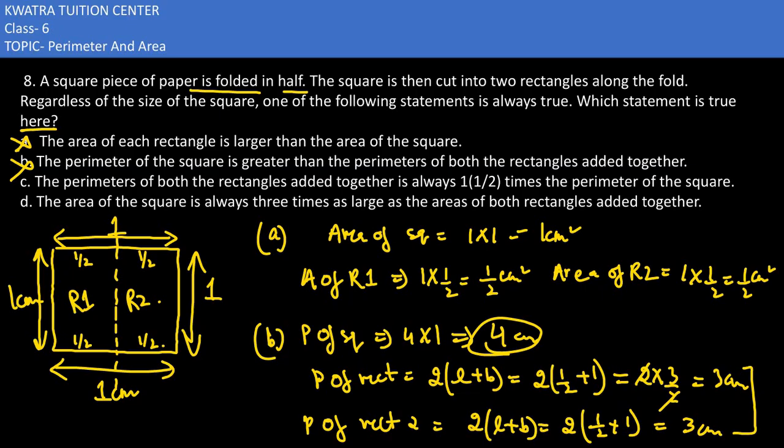Let's check. Perimeter of both the rectangles added together is always 1 and a half times the perimeter of the square. Now see the perimeter of the total rectangles is 6 cm. Now we have to check. They said that 1 and 1/2 is there, mixed fraction. And they are saying that the perimeter of square is there, which is 4.